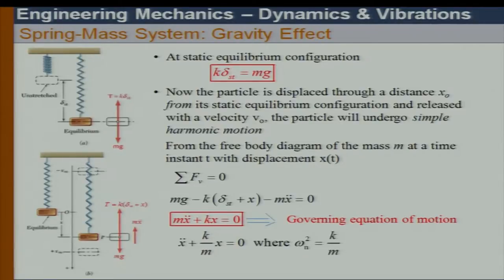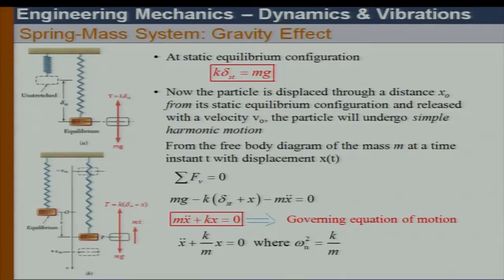If I consider the motion of the body at a distance x from the static equilibrium configuration, the spring force equals K times the total displacement, which is delta_ST plus x. We also have weight mg and mass times acceleration. The inertia force M times x double dot is placed in the body in the opposite direction.